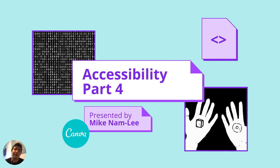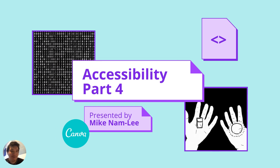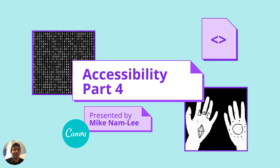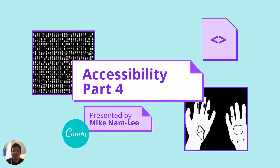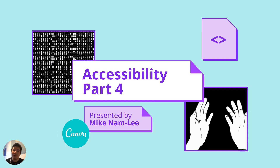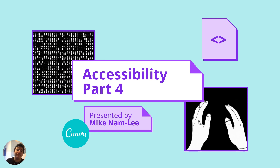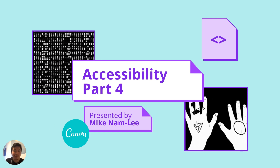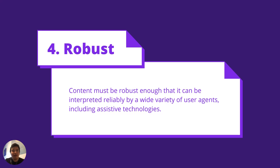Hi class, welcome to accessibility part four. This is the last lecture in the series on accessibility. We're mostly going to be covering robustness with a little bit of a wrap-up. Robustness means content must be robust enough that it can be interpreted reliably by a wide variety of user agents, including assistive technologies.